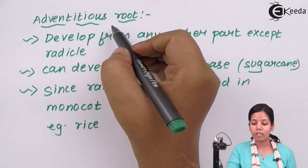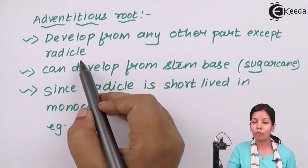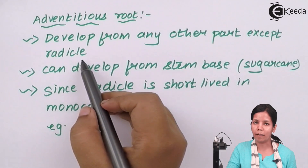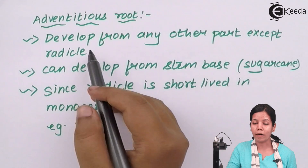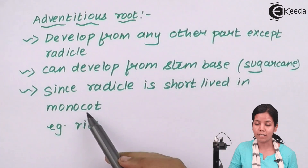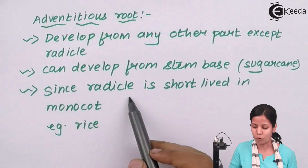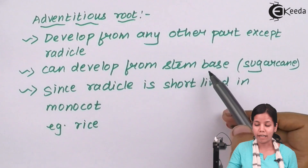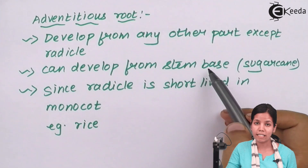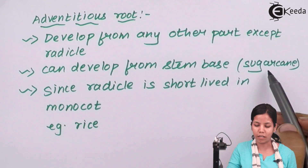Adventitious roots develop from any other part of the plant — it could be a node or internode, but not from the radicle. Since in monocots the radicle is short-lived, adventitious roots can develop from a stem base, or from the internode part of a sugarcane, for example.